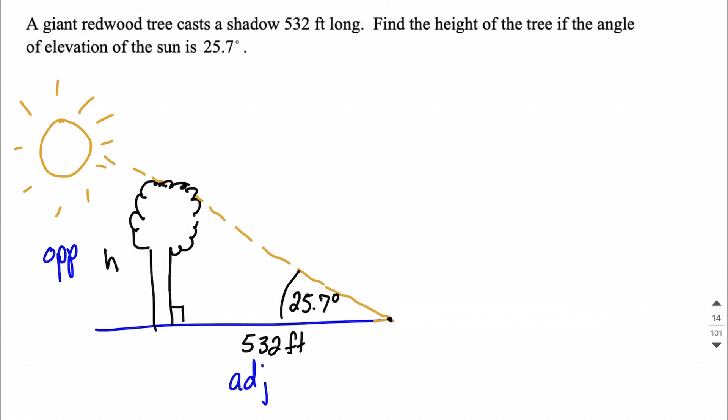The dashed line where the sun is going down there from the top of the tree all the way to the end of the shadow would be our hypotenuse, but we don't really need the hypotenuse. From here, let's identify which of our trigonometric ratios we need to use. So we have SOH-CAH-TOA, right?